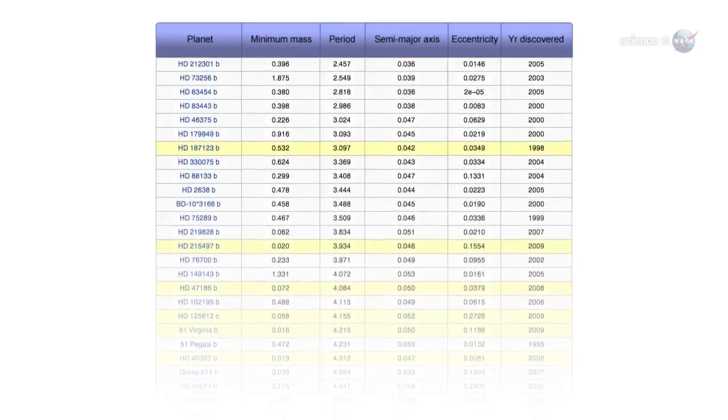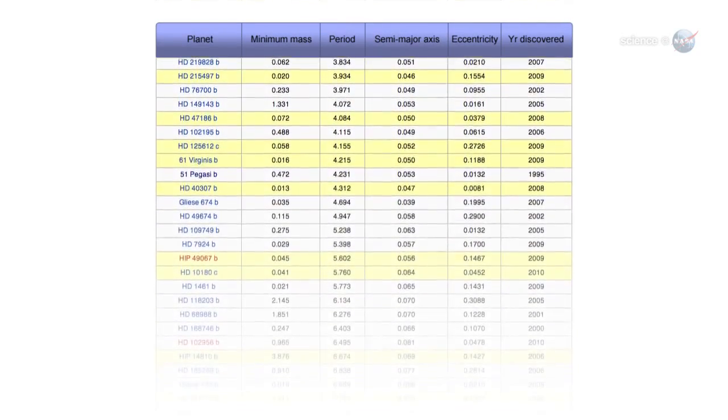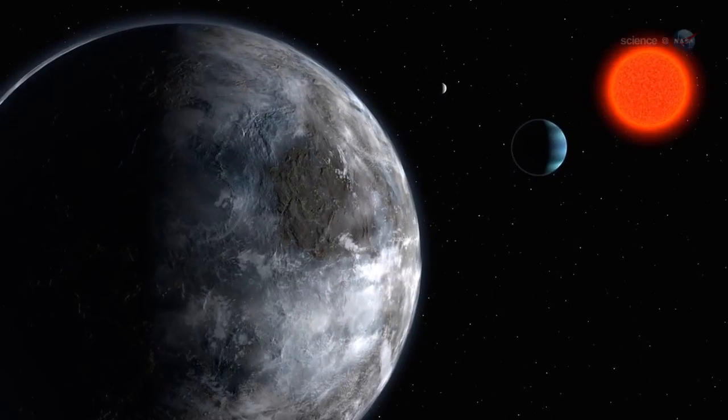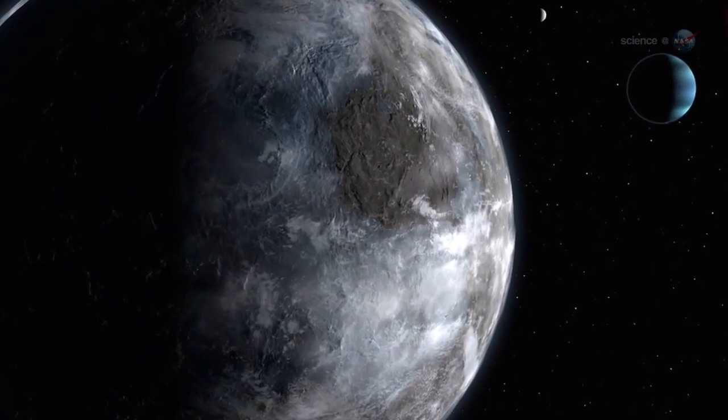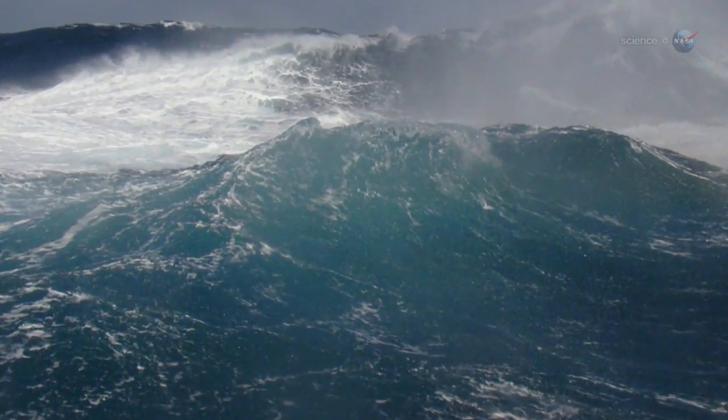As the numbers mount, it seems to be just a matter of time before Kepler finds what astronomers are really looking for: an Earth-like planet orbiting its star in the Goldilocks zone, that is, at just the right distance for liquid water and life.